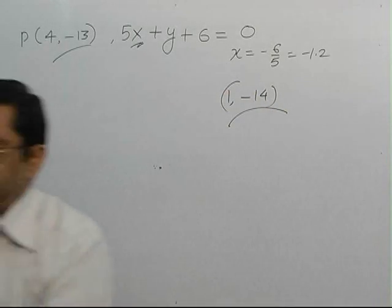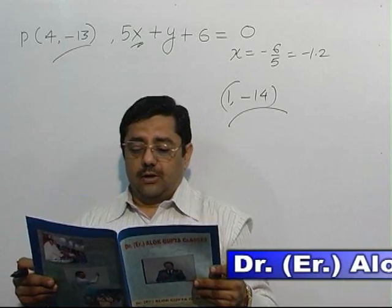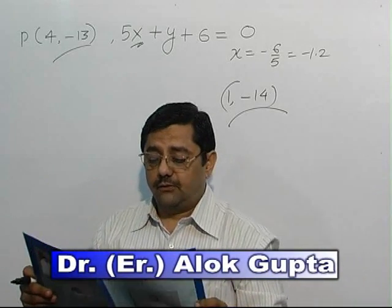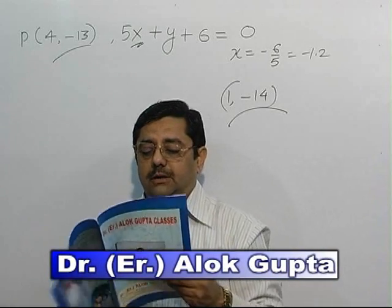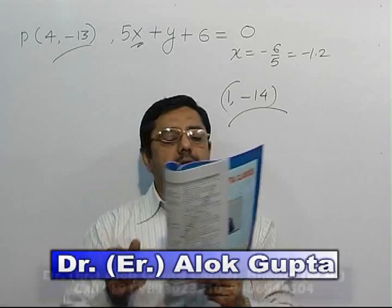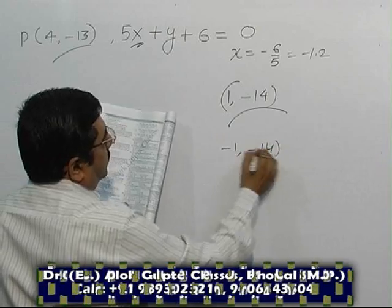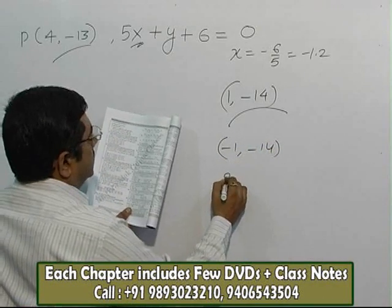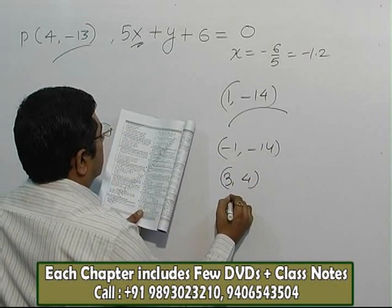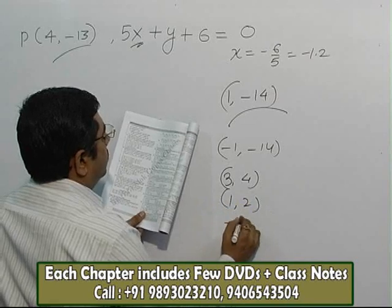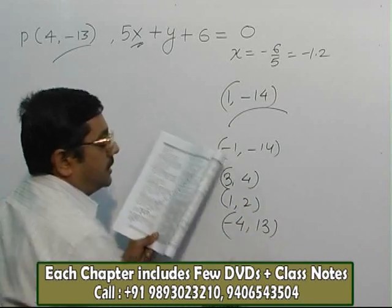Ab option check kar lije. Now, what are the options given? Which question? Fifth. First option: (-1, -14). It is (-1, -14). Second option: (3, 4). Third is (1, 2). Fourth is (-4, 13).